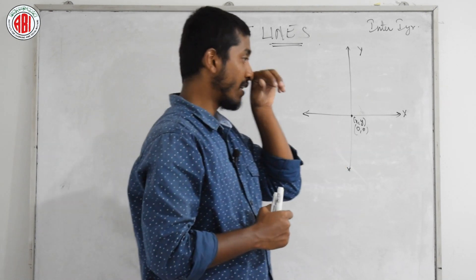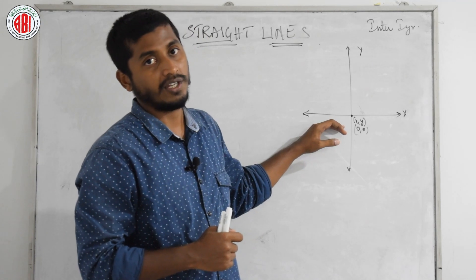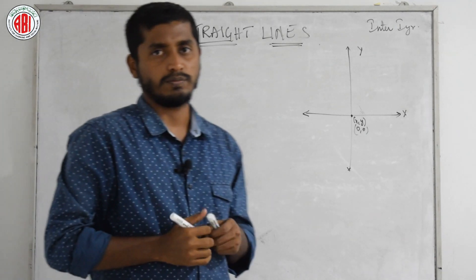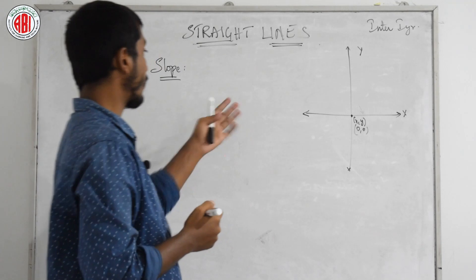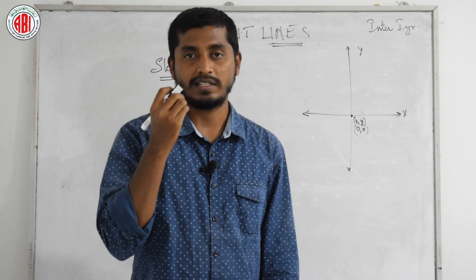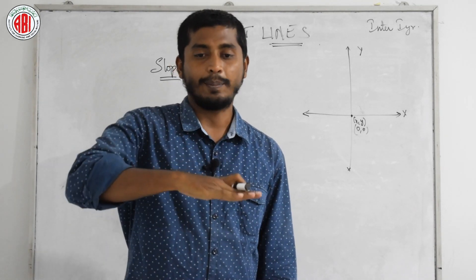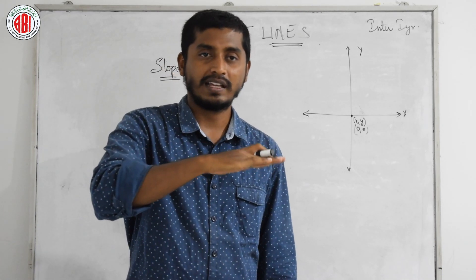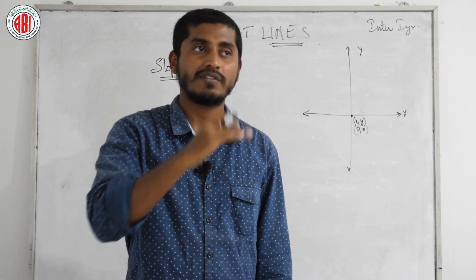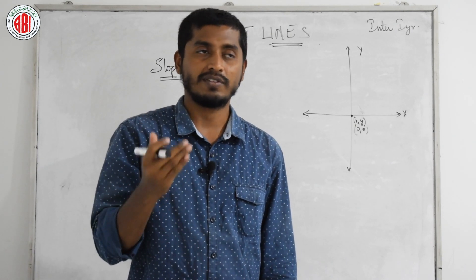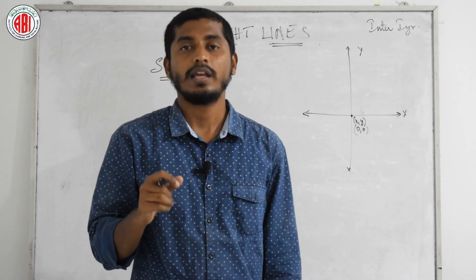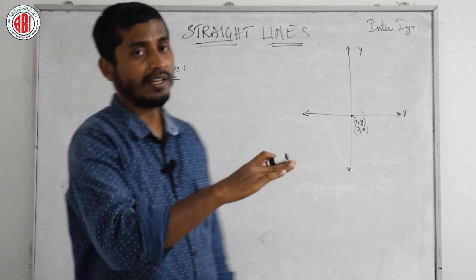Now let us discuss the first important parameter: slope. What is a slope? We use the term slope generally to describe a bending. If there is a slight bending from the axial path, we say there is a slope. If water flows from a higher point to a lower point, we find there is a slope or a steep — we can also call it a gradient. A slope can be defined as the gradient of a particular straight line.